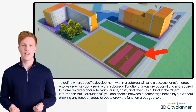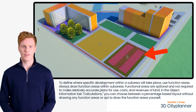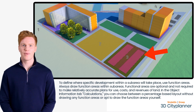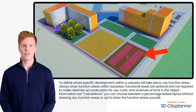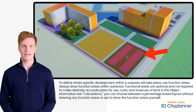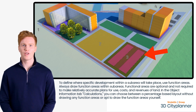To define where specific development within a sub-area will take place, use function areas. Always draw function areas within sub-areas. Functional areas are optional and not required to make relatively accurate plans for use, costs, and land revenues. In the Object Information tab, under Calculations, you can choose between a percentage-based layout without drawing any function areas, or opt to draw the function areas yourself.